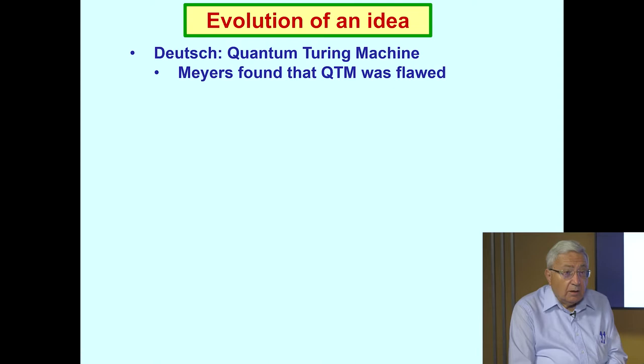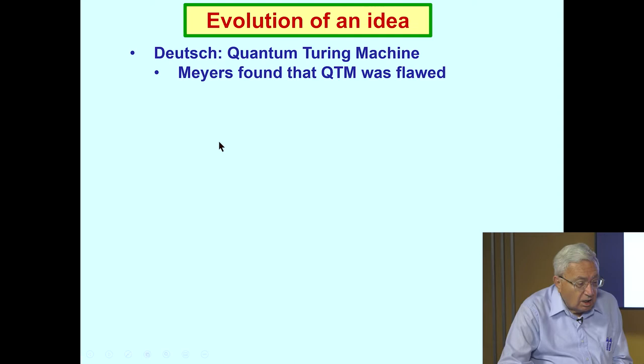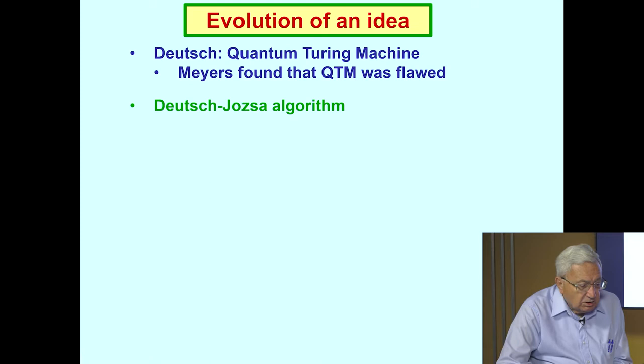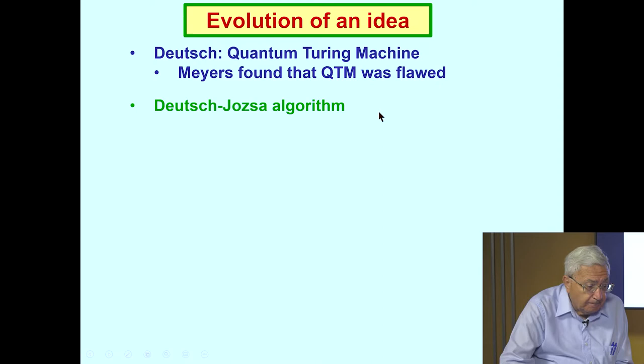Initially, David Deutsch, a student of John Wheeler, wrote a paper on quantum Turing machines. And sometime later, John Meyers found that the concept of a quantum Turing machine was flawed. Somehow, the clock of the Turing machine became entangled with the data and caused computational problems. Then, Deutsch came along again with the first quantum algorithm, which was later extended by Jozsa to the Deutsch-Jozsa algorithm.